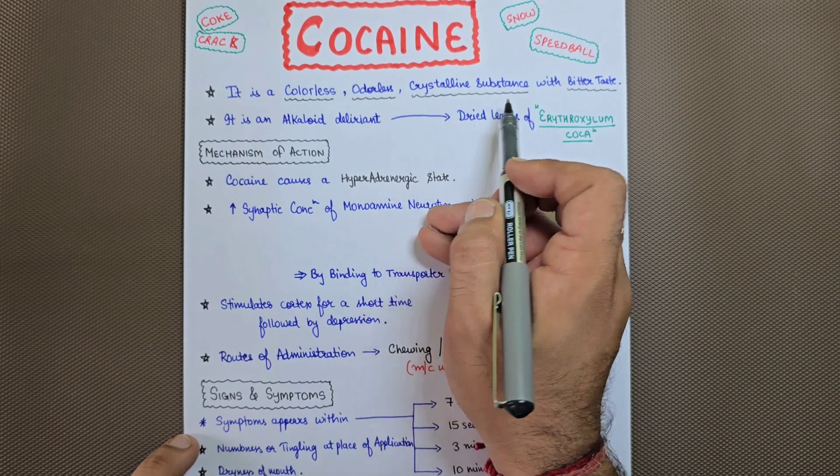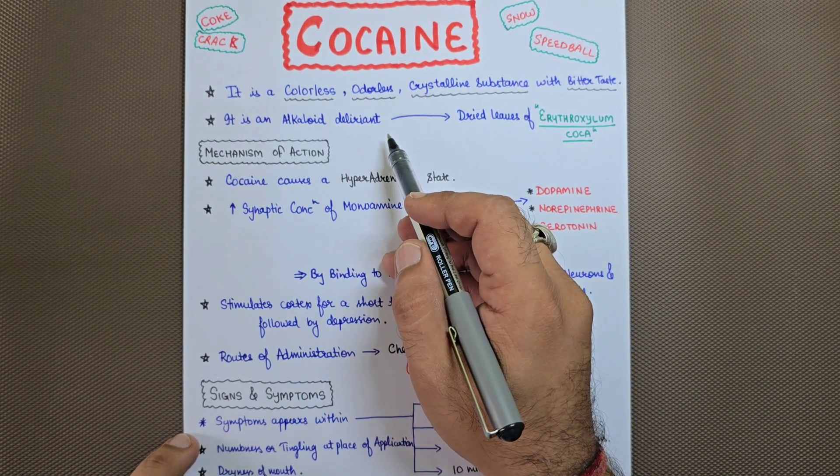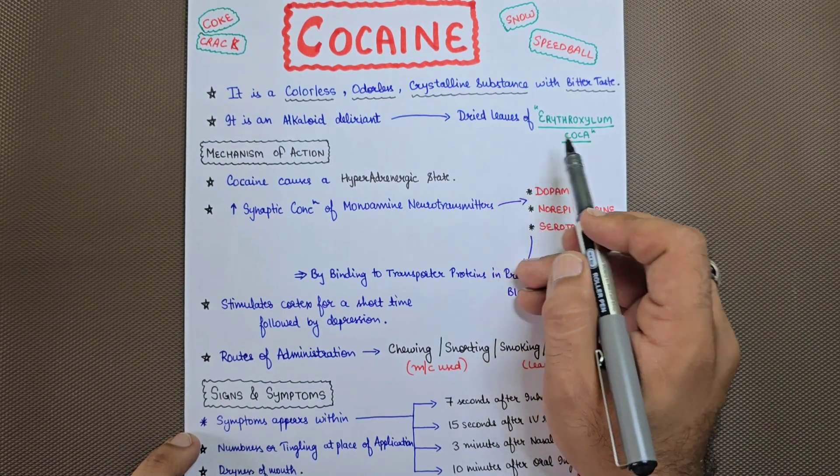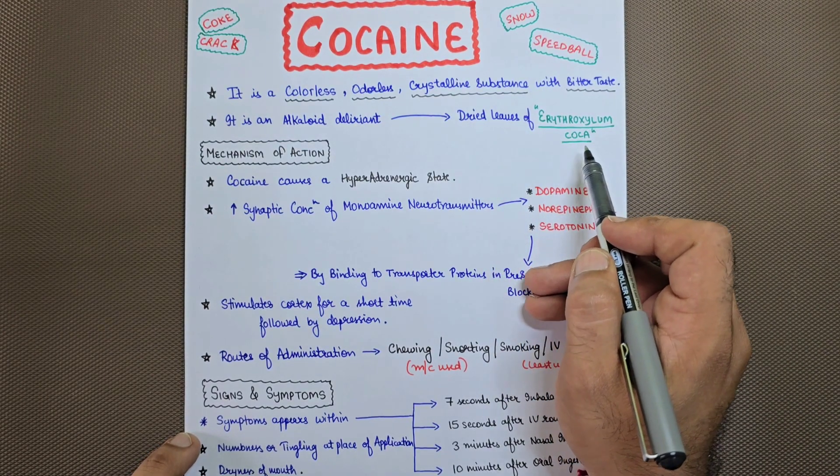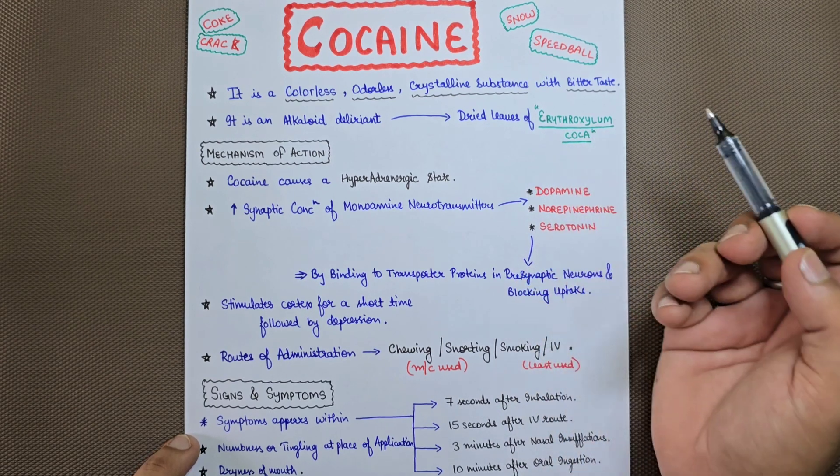Cocaine is a colorless, odorless, crystalline substance with bitter taste. It is an alkaloid delirant derived from the leaves of erythroxylum coca.